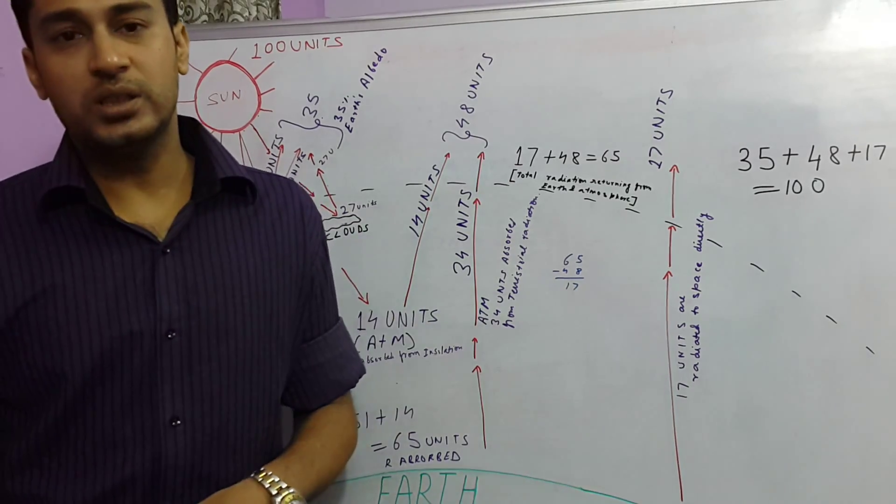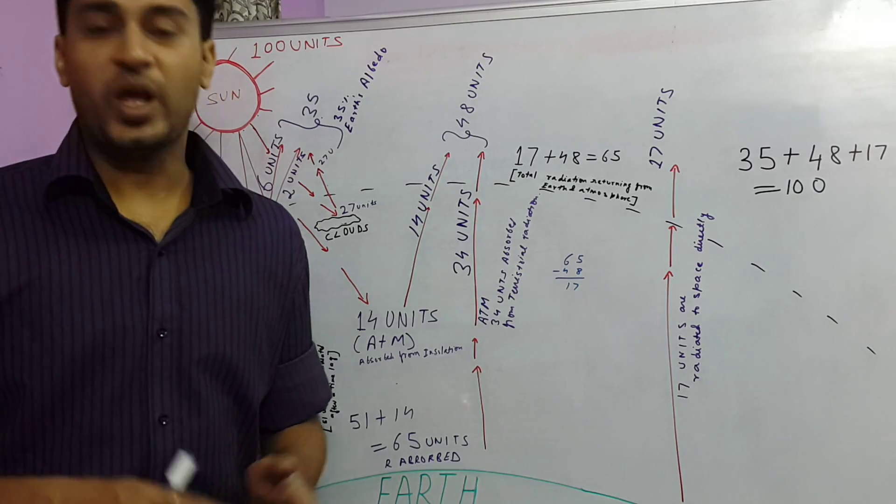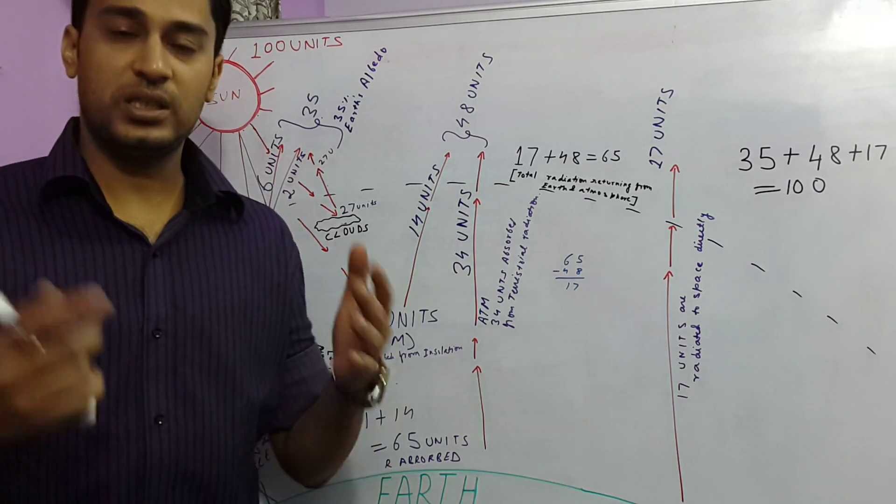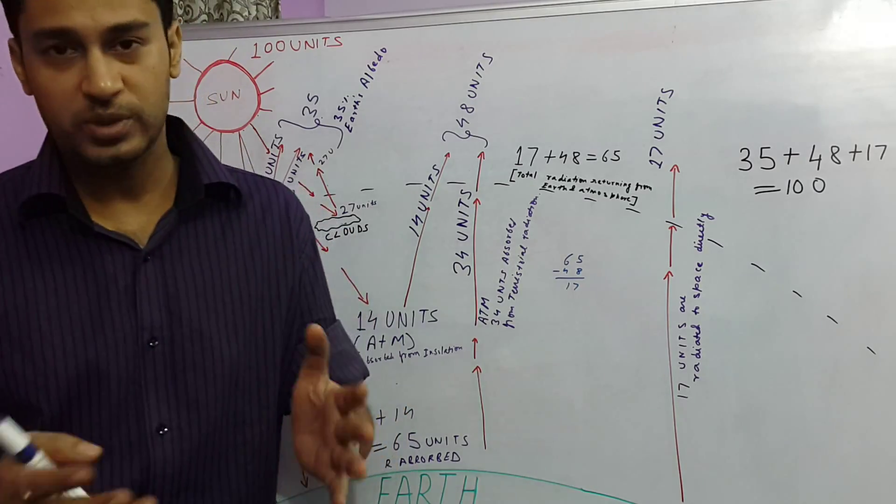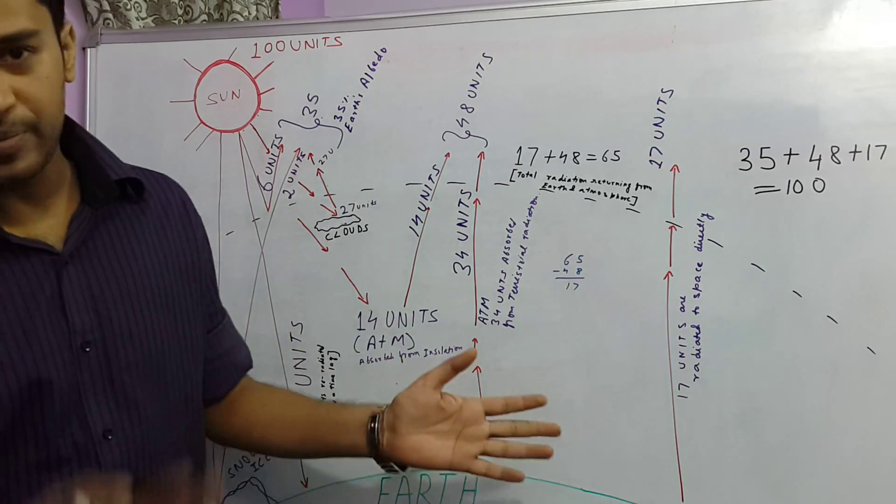The temperature of the earth remains by and large constant and this is despite the fact that the earth continuously receives insolation from the sun. So we will see how this happens in this video.